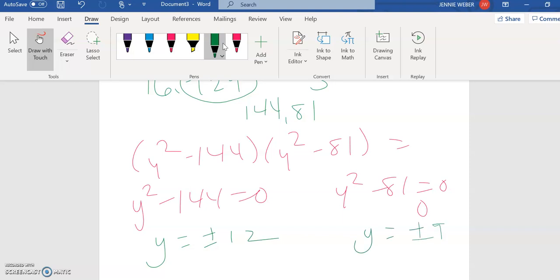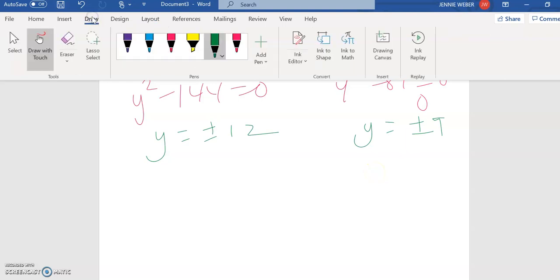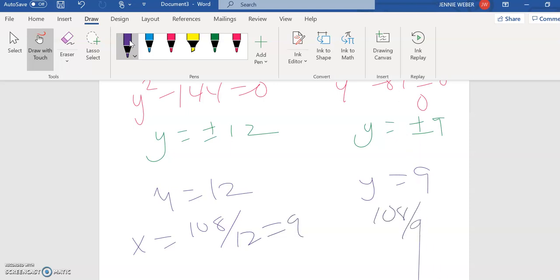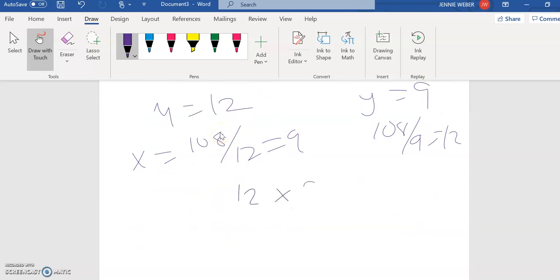But can we have a negative side of a rug? No. So y equals either 12 or 9, which then when you put this back in, x equals 108 divided by 12 is 9, 108 divided by 9 is 12. So this is a 12 by 9 rug or a 9 by 12, whichever one you want to call it.